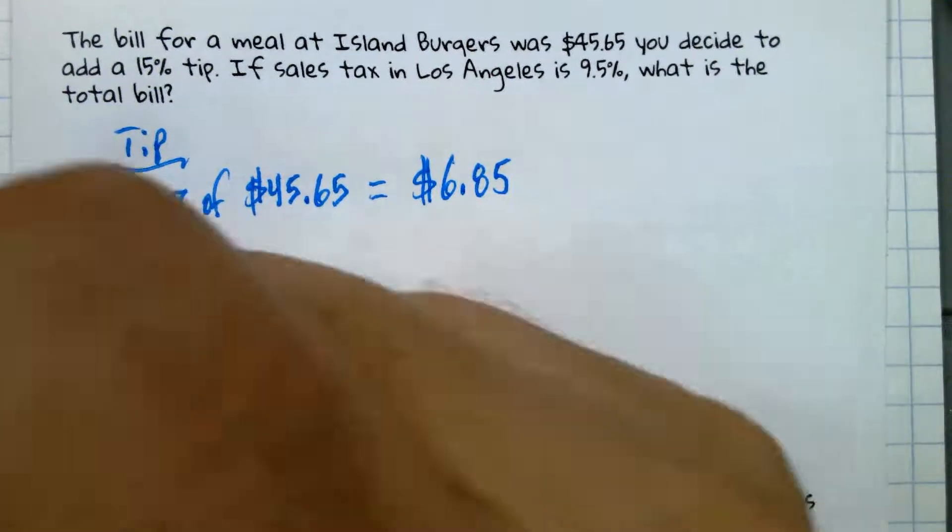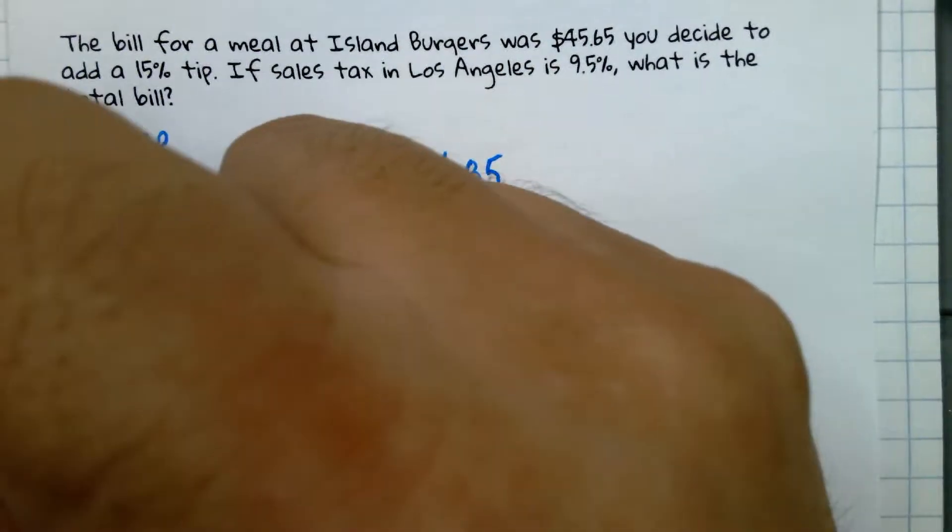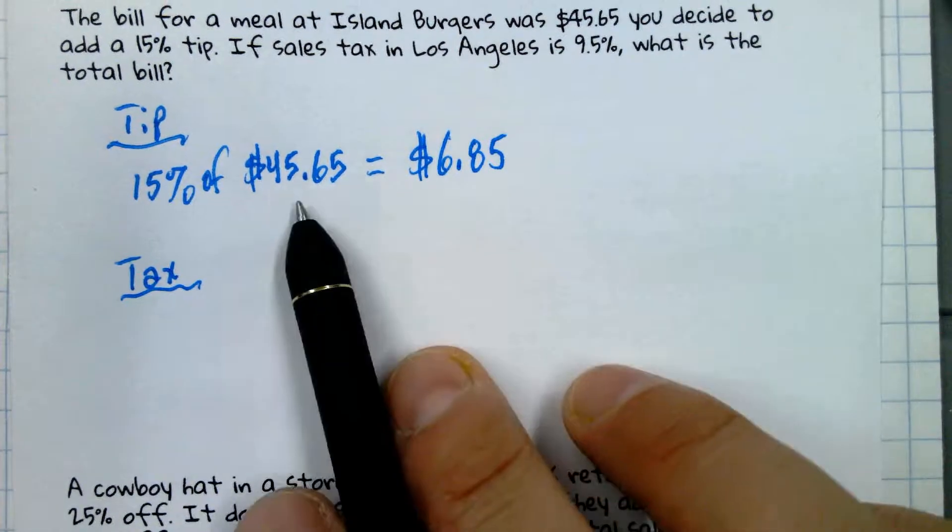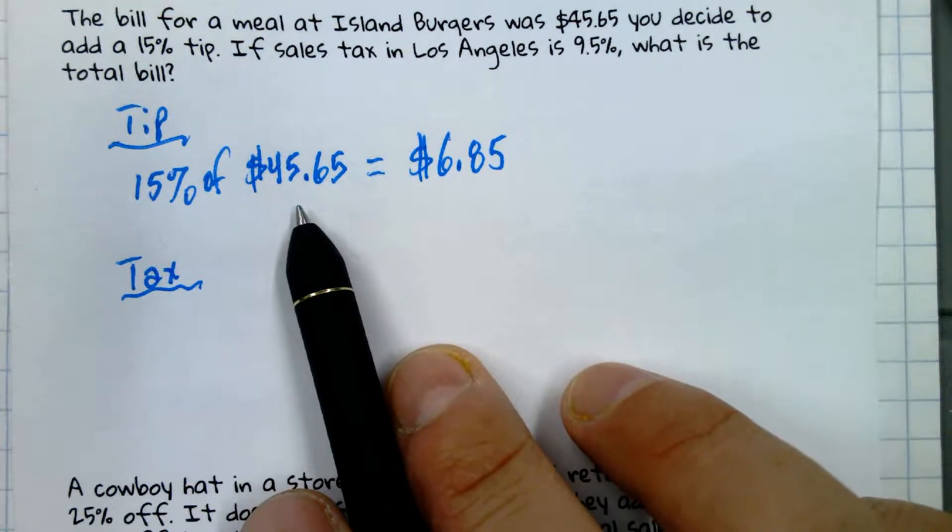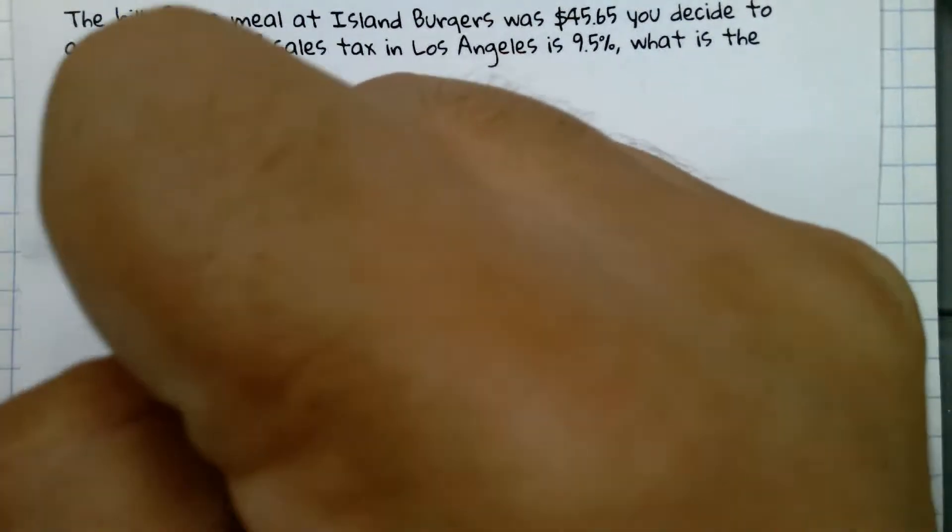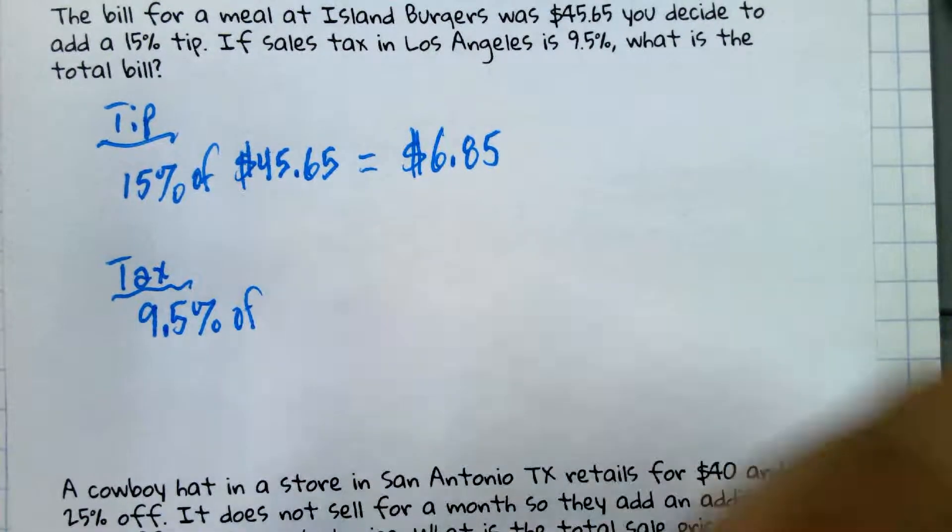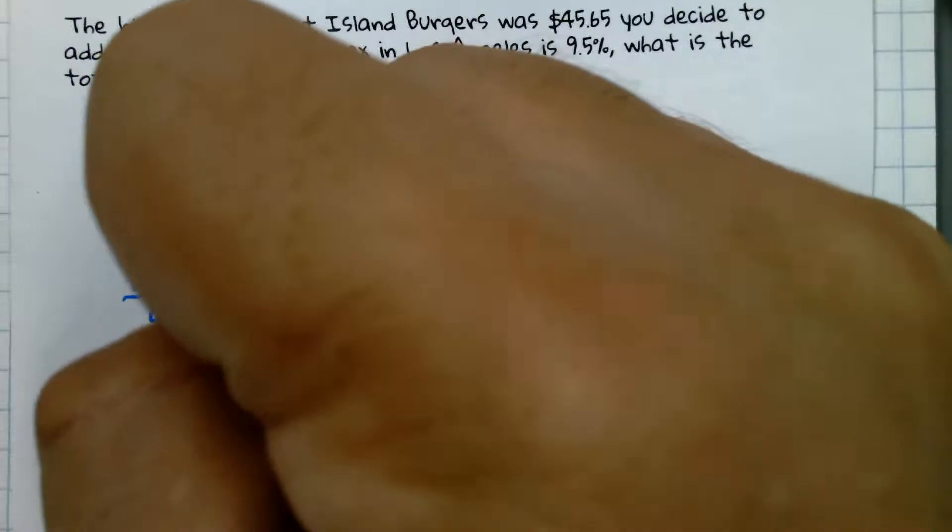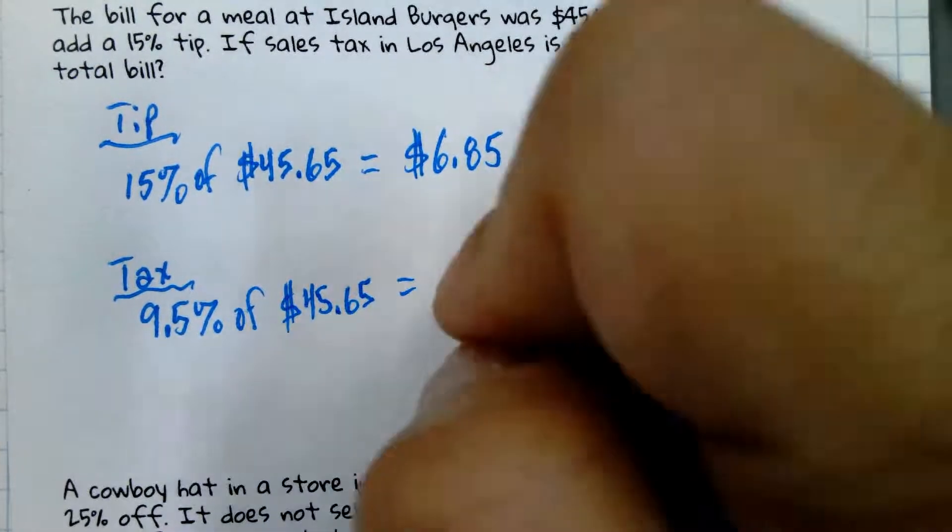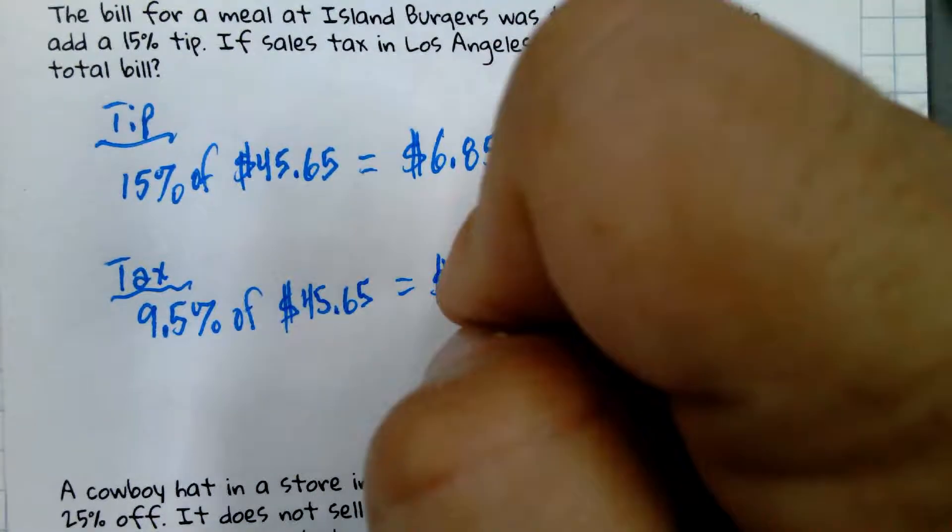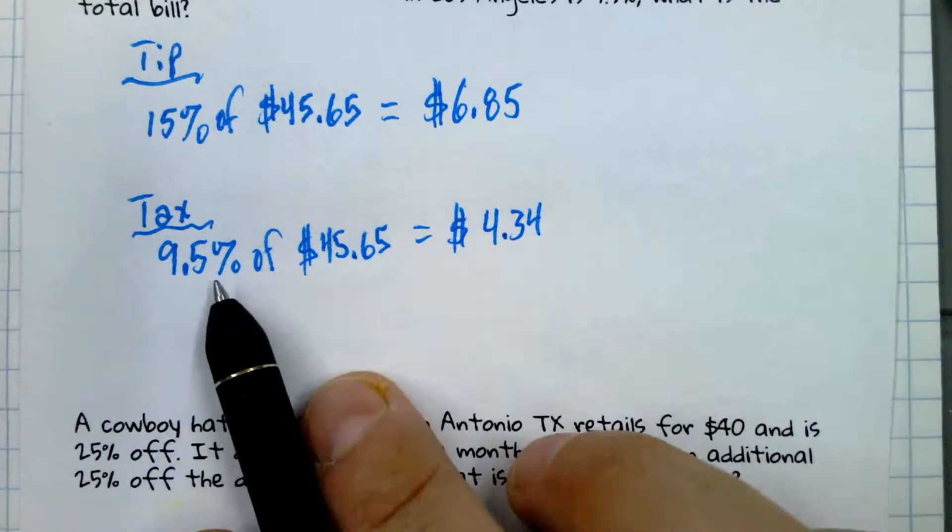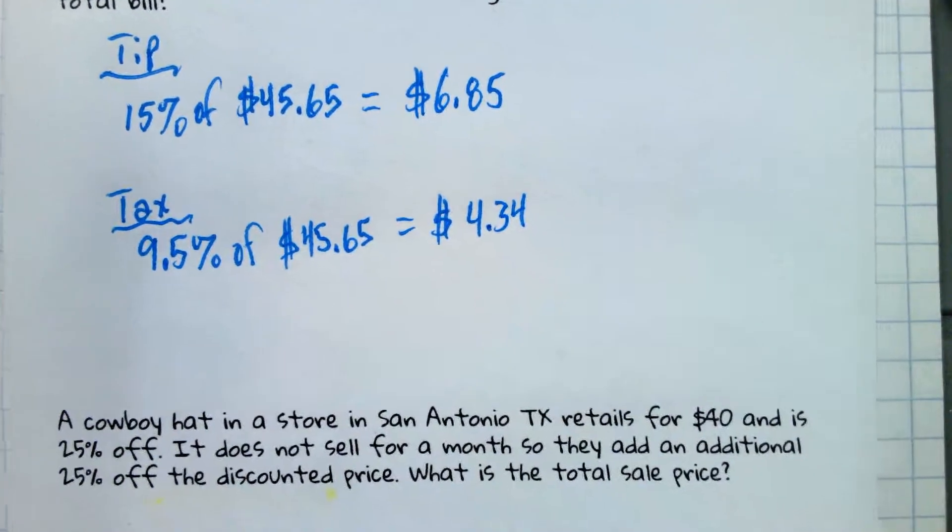And then let's do the tax. Should we do it the same way? In other words, 9.5% of $45.65? Yes, let's try that. 9.5% of, again, that original price, $45.65, which would be $4.34. So basically multiply the percent as a decimal times your original price. Now let's get the total bill.